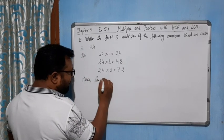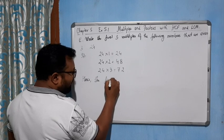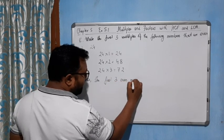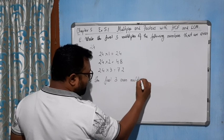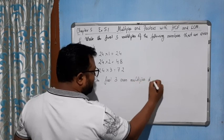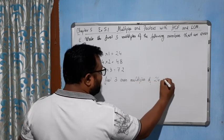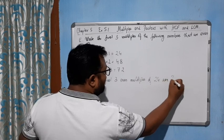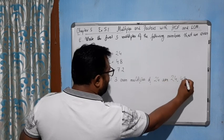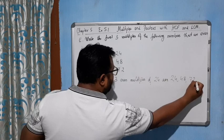Hence, the first three even multiples of 24 are 24, 48, and 72.